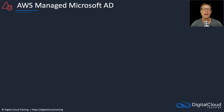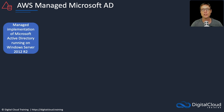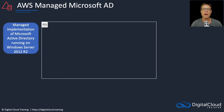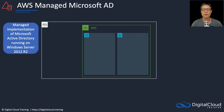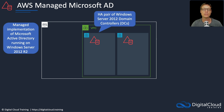Starting off with the AWS managed Microsoft Active Directory. This is a managed implementation of Microsoft Active Directory and it runs on Windows Server 2012. When you create a managed Microsoft AD, it actually creates a high availability pair of Windows Server 2012 domain controllers across multiple subnets in multiple availability zones. That's how it's highly available.